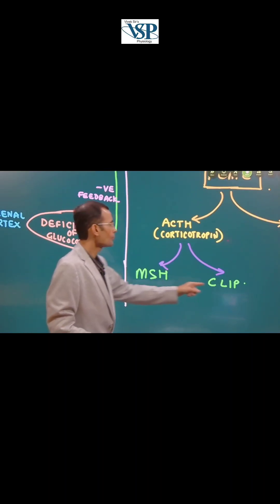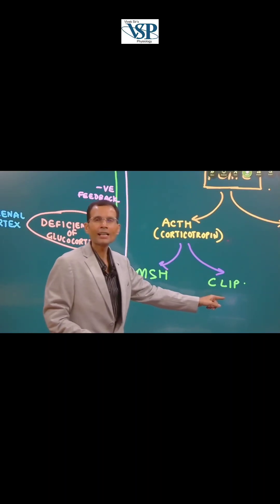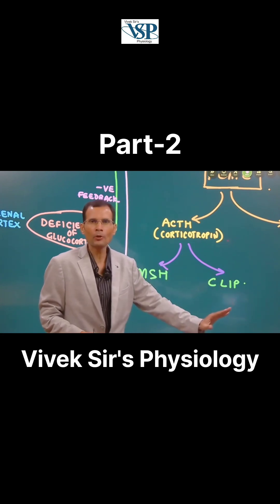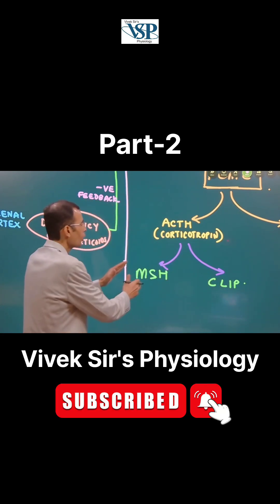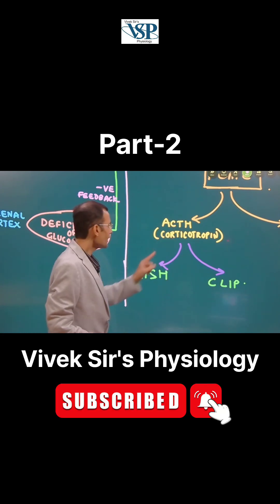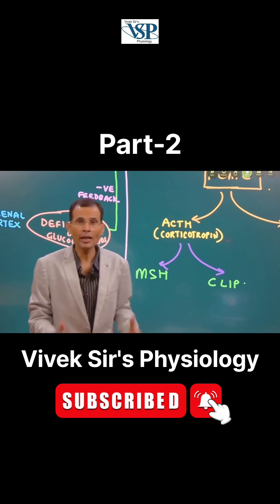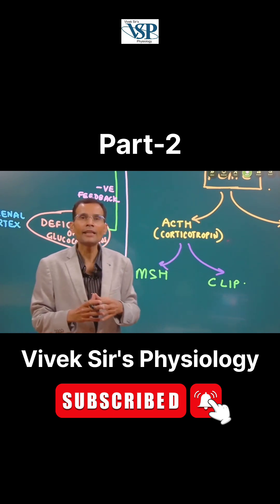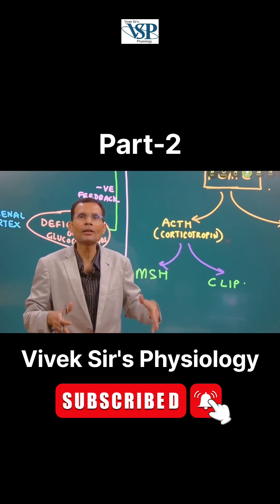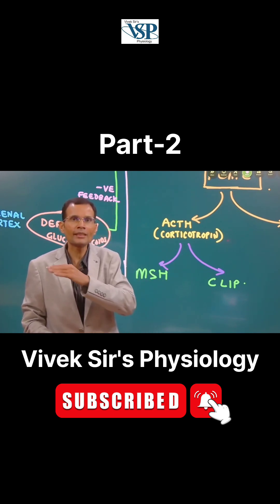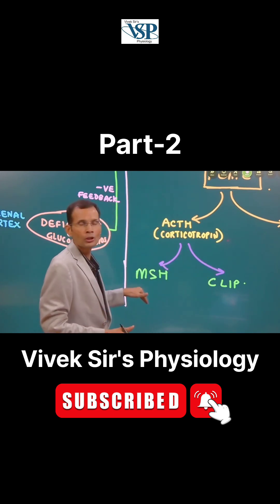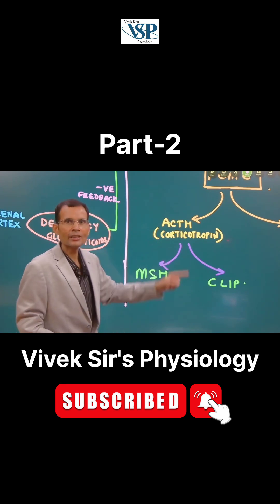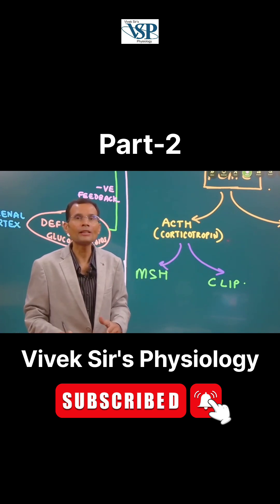Alpha-melanocyte stimulating hormone and CLIP (corticotropin-like intermediate lobe peptide) are not important for us right now. Let's focus on ACTH and MSH, because they are derived from the same polypeptide precursor and they share the first 13 amino acid residues. So there is a sequence homology in these two ligands.